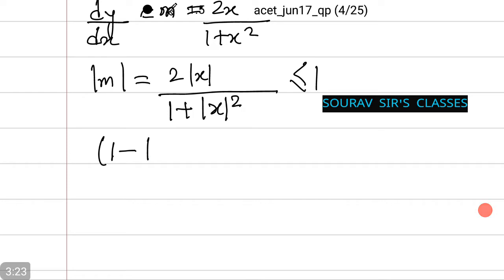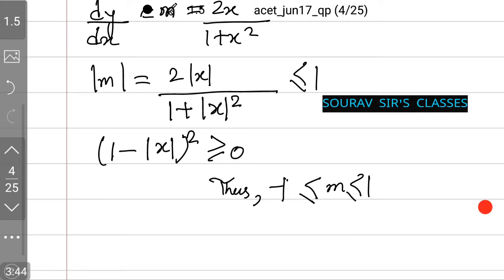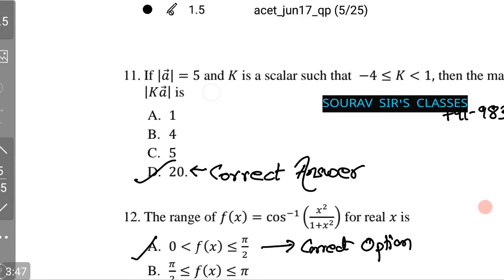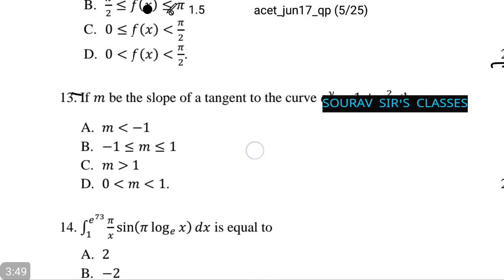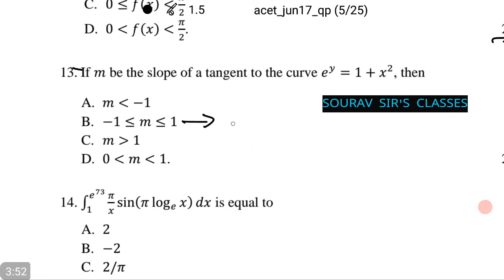As 1 minus modulus of x whole squared is greater than or equal to 0, thus m lies between minus 1 and plus 1. Option number B is the correct answer.